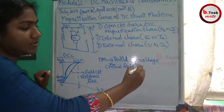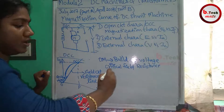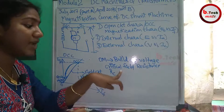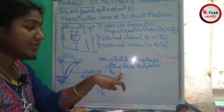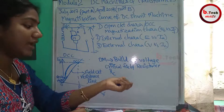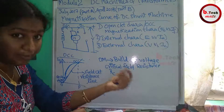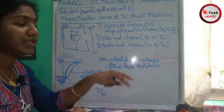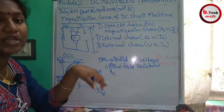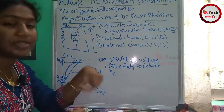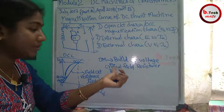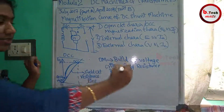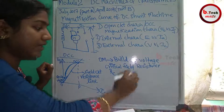Critical field resistance is defined as the maximum resistance required to maintain the generator to just build up voltage when the field current is applied. It is the maximum resistance required to just excite the generator — that is why it is called critical field resistance.